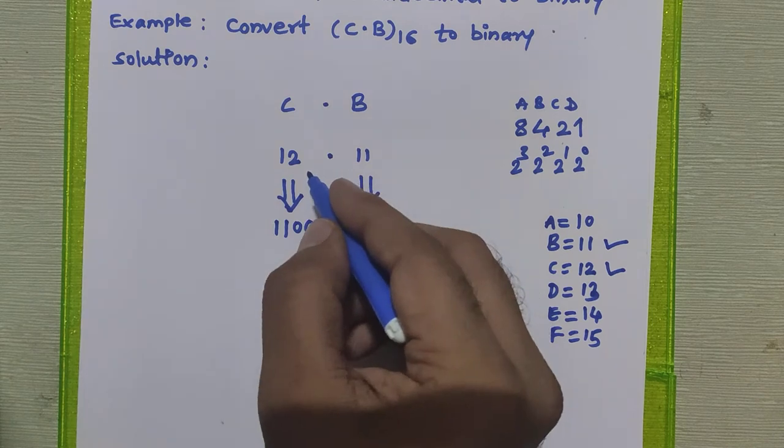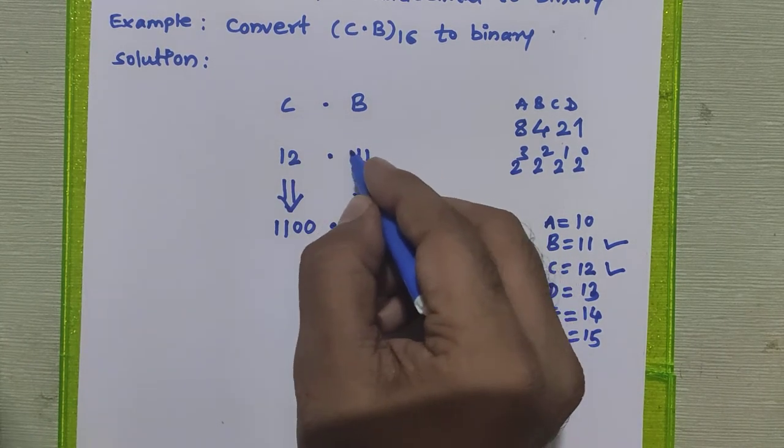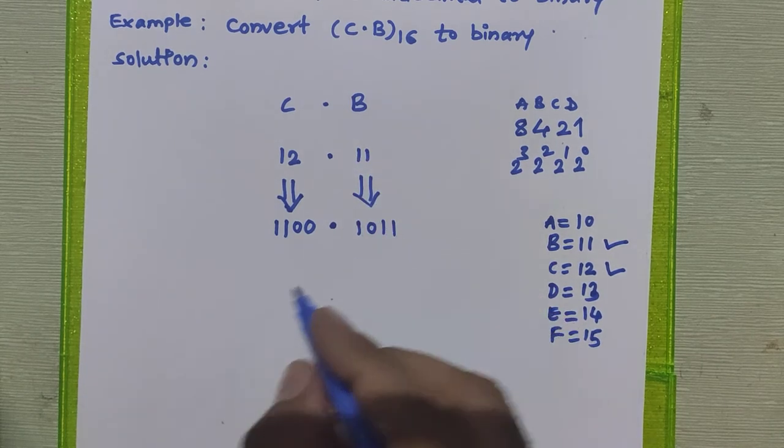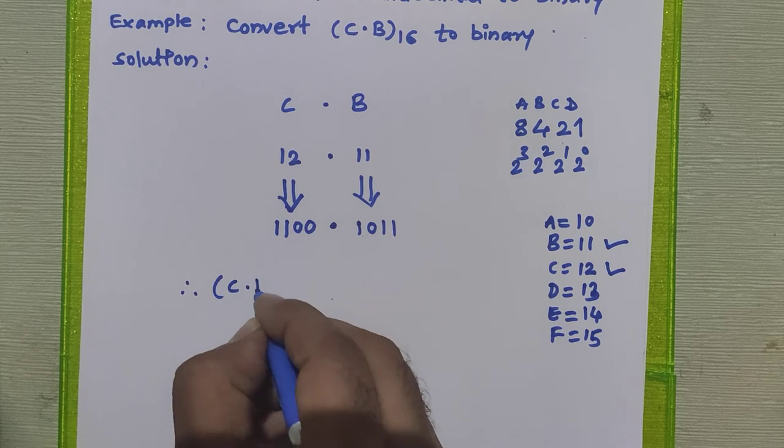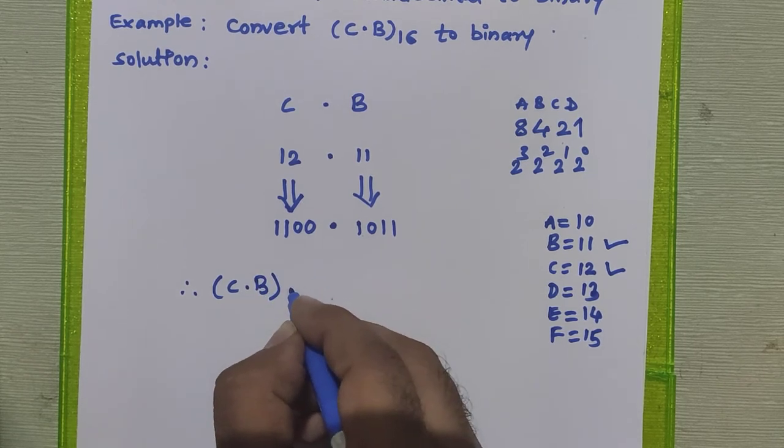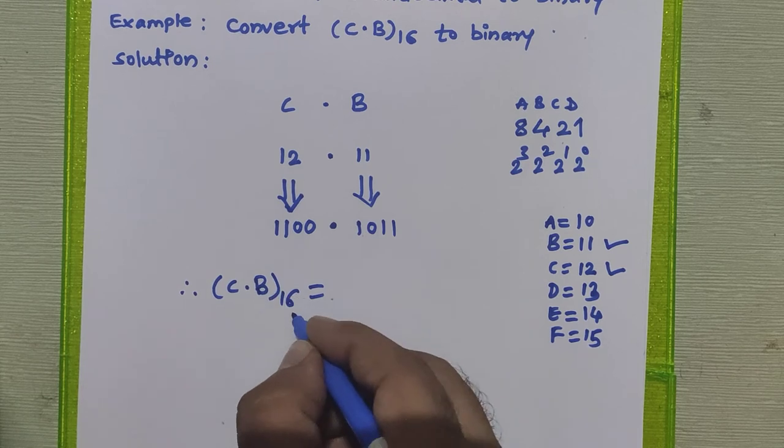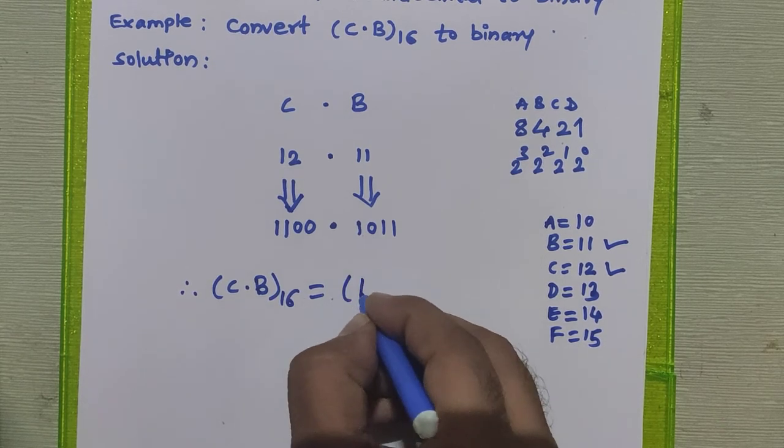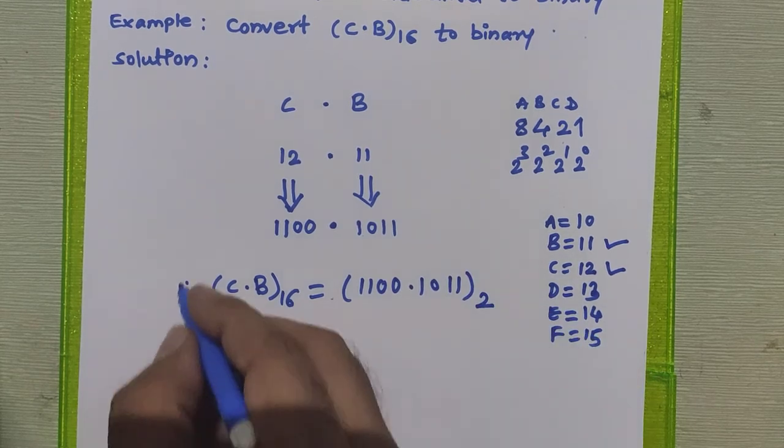So we have converted this hexadecimal digit into binary, this hexadecimal digit into binary. To get the actual result, we have to combine both integral part as well as fractional part. C.B in hexadecimal is equal to 1100.1011 in binary.